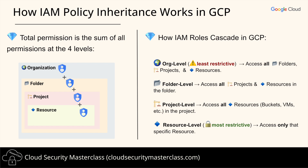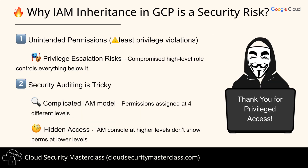For example, if you assign a role at an org level, it applies to all folders, projects, and resources inside that org. So why does this matter from a security standpoint? The number one reason IAM inheritance in GCP is a security concern is because it makes it far too easy for developers to accidentally assign permissions to way more resources than intended. Applying a role at a higher level automatically grants access to everything underneath it, meaning a simple misconfiguration could violate the principle of least privilege, exposing sensitive resources that were never meant to be accessible.